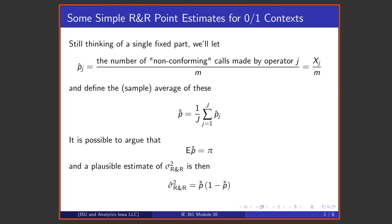Still thinking of a single fixed part, we're going to use p hat sub j to stand for the fraction of calls that operator j makes that are non-conforming calls. That's an estimate of operator j's probability of making a non-conforming call. If one then thinks about averaging those over j operators to get an average p hat, it makes sense that that quantity should average to the population average of the p's. That is, the p hat bar is an estimate of the parameter pi that describes how p's vary operator to operator.